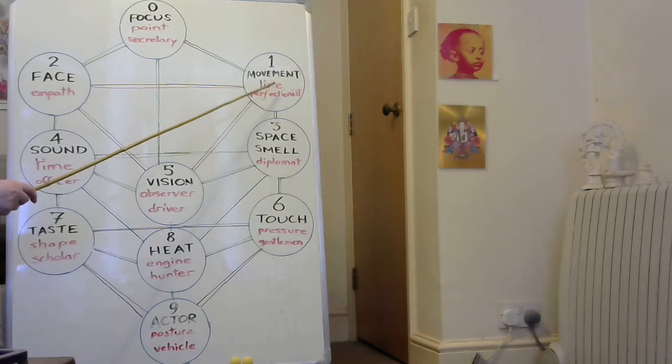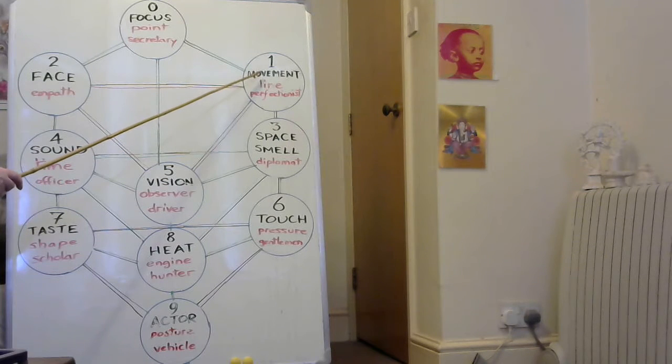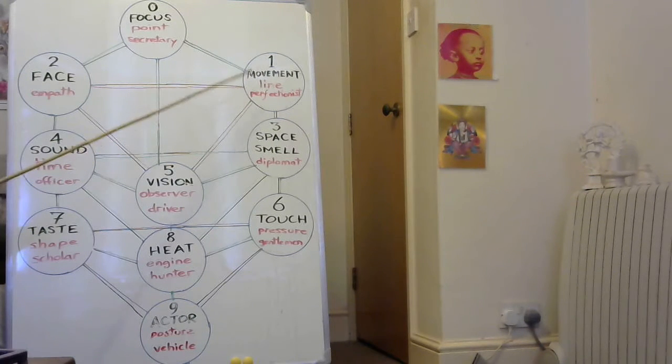You get a line, and that following the line is the perfectionist. So we sense the movement, and it is the perfectionist. The response to that being a perfect line, a straight line. The perfectionist is the straight.